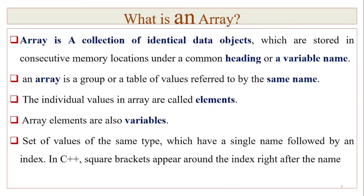If you want to use C++, a variable is a reserved memory location which is used to store a value. For example, int x is equal to 5. x is an integer value which is known.